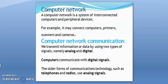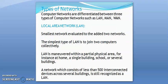In computer network communication, we transmit information or data by using two types of signals: analog and digital. Computers communicate with digital signals, while the older forms of communication technology such as telephones and radios use analog signals.